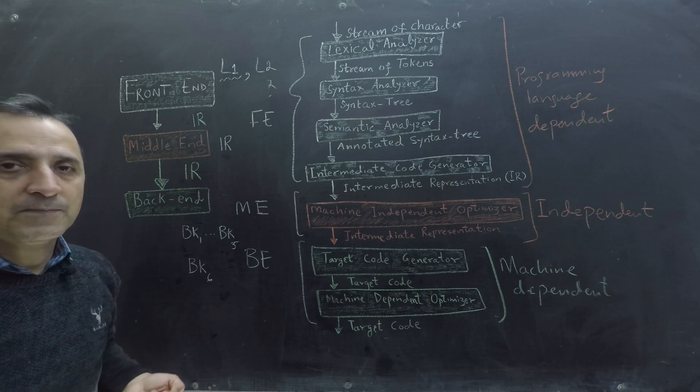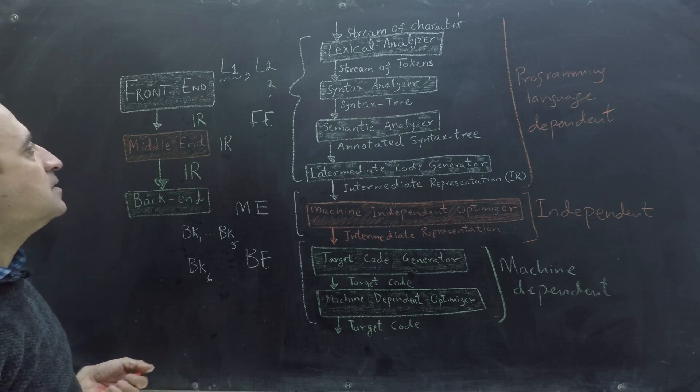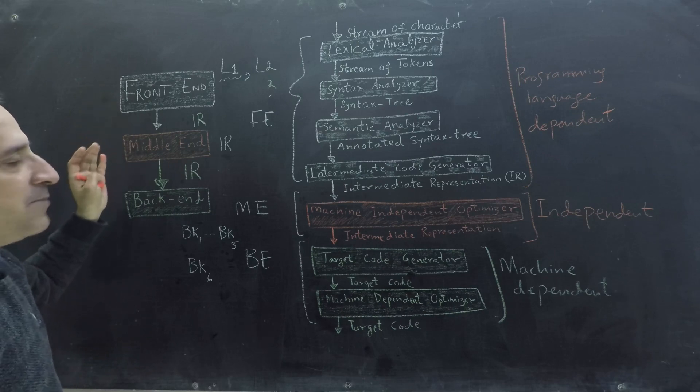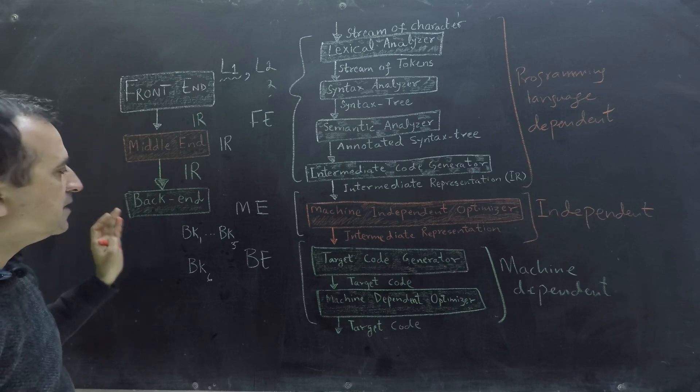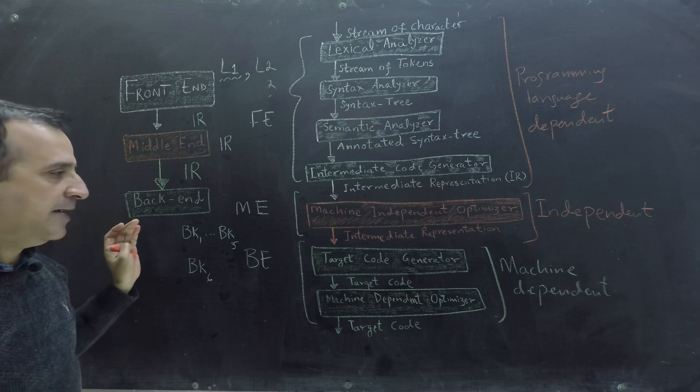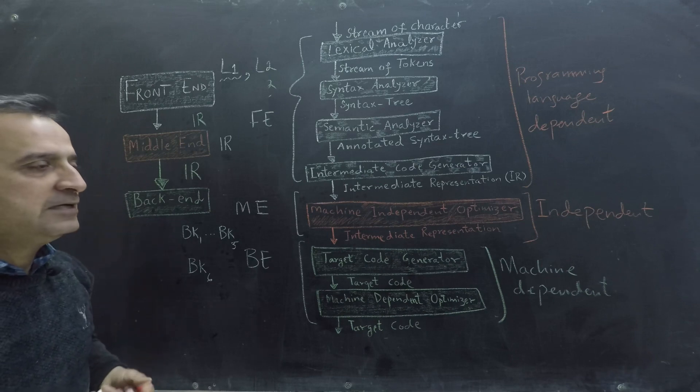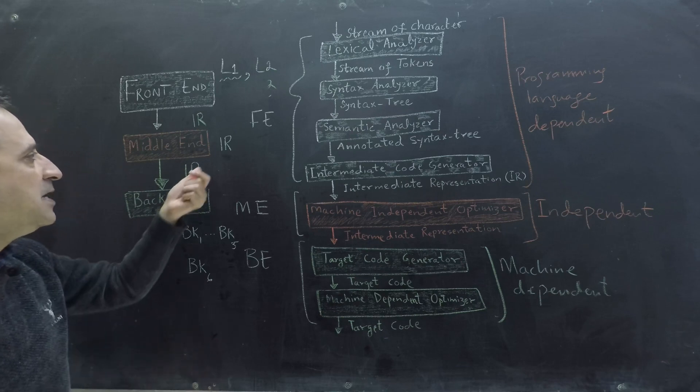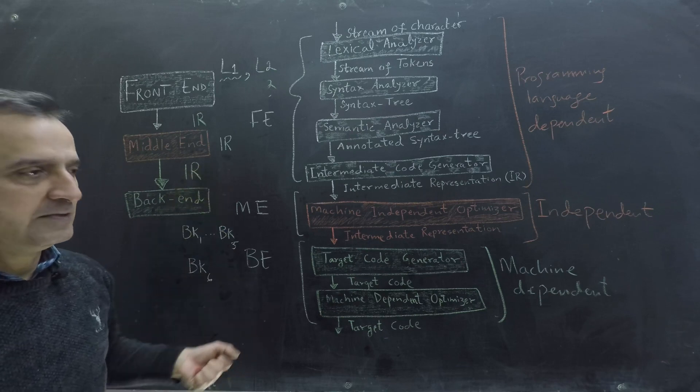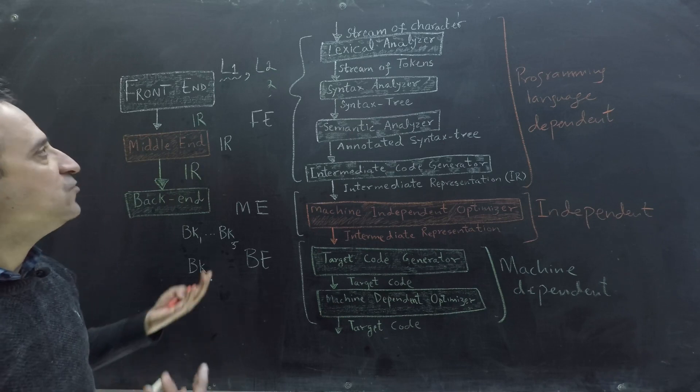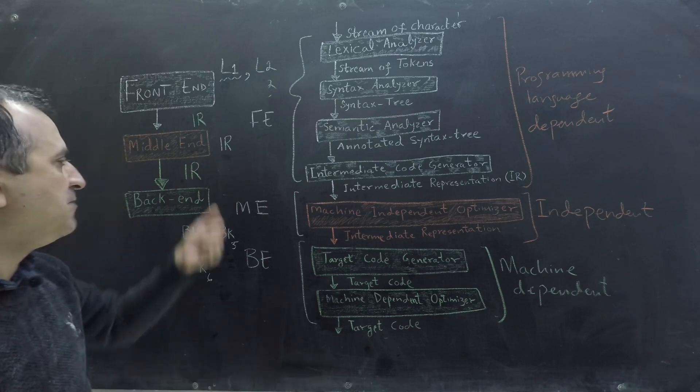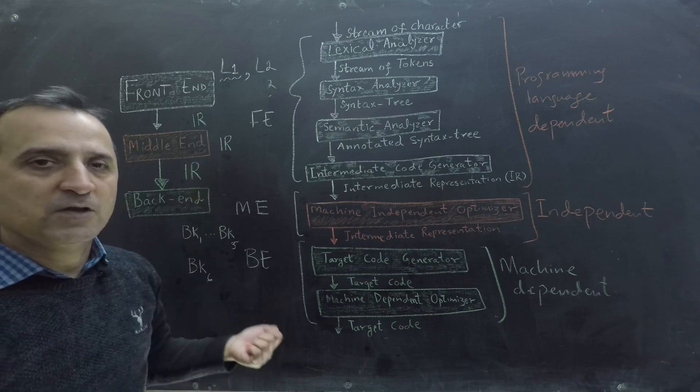So this model of dividing compiler into language dependent front-end and independent middle-end and machine dependent back-end enables sharing of different backends and middle-end between different compilers. We have to write a new front-end for new languages, but we don't have to write the middle-end and back-end for the new languages.